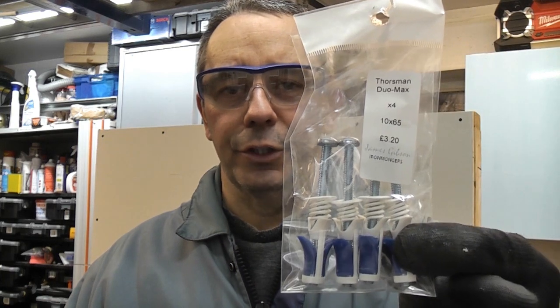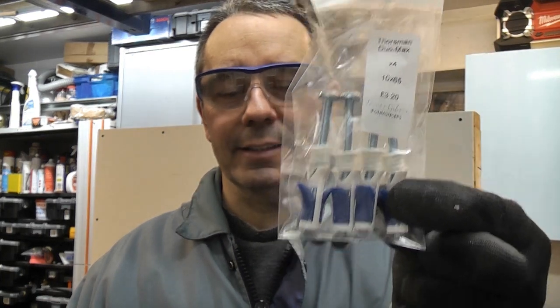These are the Toysman Duo Max plasterboard fixings. I actually picked these up from a local hardware store, and sometimes you don't always need the world's strongest plasterboard fixing, you just need one that is quick, easy to use, and is going to work.